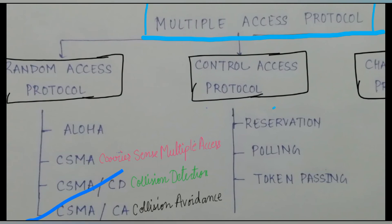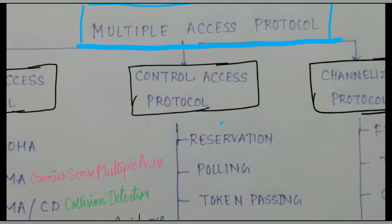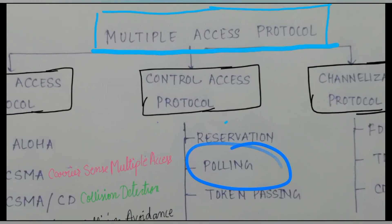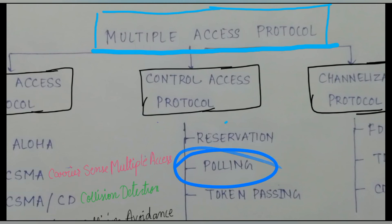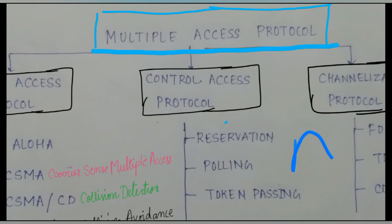CSMA/CD and CSMA/CA are also part of this. The second is your control access protocol, which includes reservation, polling, and token passing. In polling, it is decided that A will transfer first, then B will be allowed, then C. In token passing, a token revolves among devices — A, B, C — and each device gets the chance to hold the token and transmit data.